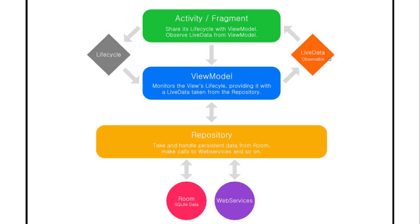The Activity or Fragment takes its lifecycle data; the ViewModel monitors the lifecycle, providing LiveData taken from the Repository, and passes it back to the Activity or Fragment. The Repository handles persistent data — it takes data from Room database or from web services and so on.